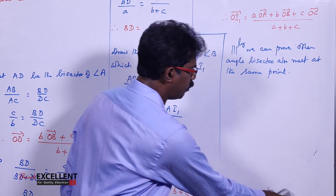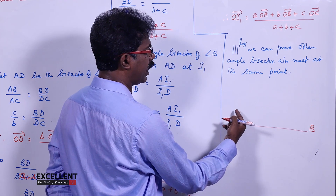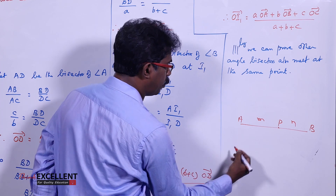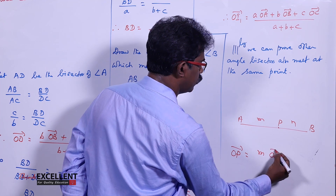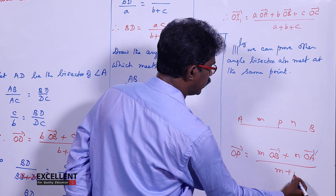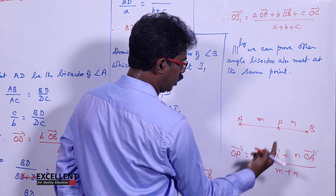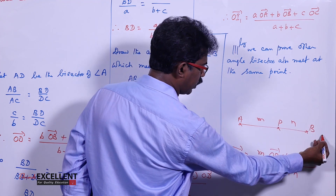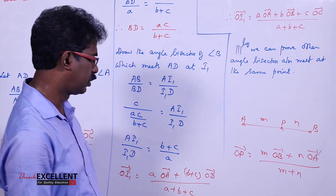The section formula: suppose A and B are points with position vectors OA and OB, and P is a point that divides AB internally in the ratio m to n. Then the position vector of P is OP = (m times OB vector plus n times OA vector) divided by (m plus n). When you take m, you go to the other end: m into b vector plus n into a vector, all divided by m plus n.